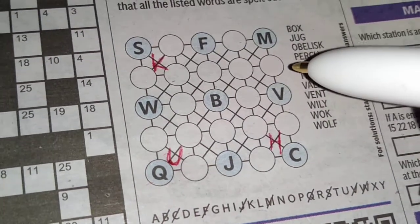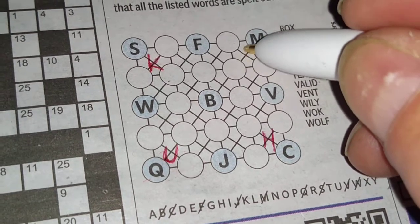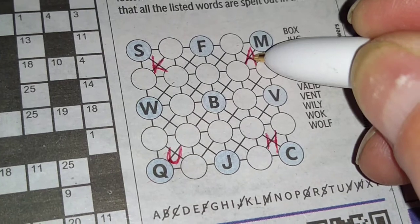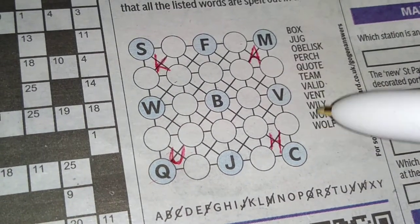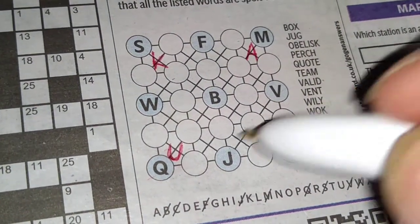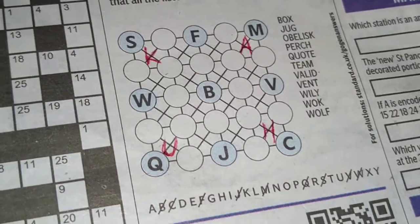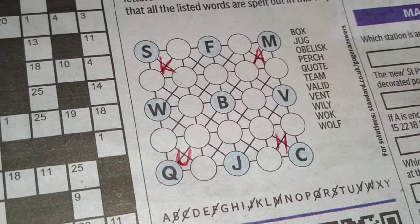Then we've got team here. Again, the A will connect to the end of the word team to the M. Quote. The E will obviously have to be next to the A as well. That's something to just maybe hold in your mind.